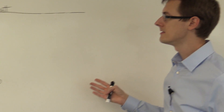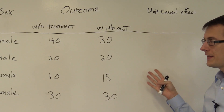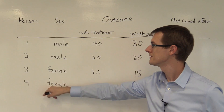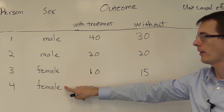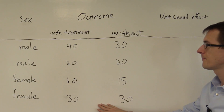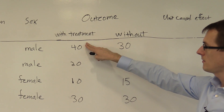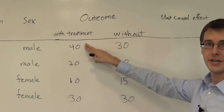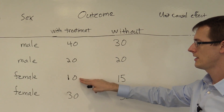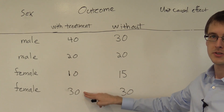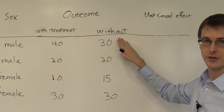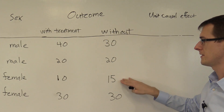Here I have an example. In this population there are four people — person 1, 2, 3, and 4 — two men and two women. Here are their potential outcomes. In this column, their outcome if they got treated: this guy would have 40, this guy 20, this woman 10, and this person 30. Over here is their potential outcome if they don't get treated: 30, 20, 15, and 30.